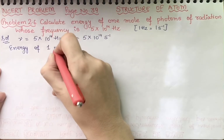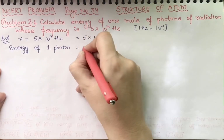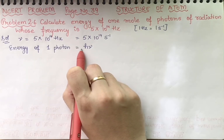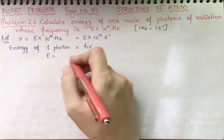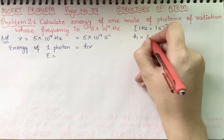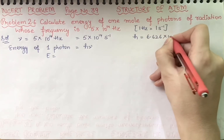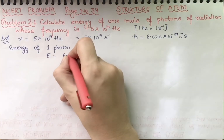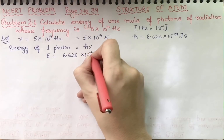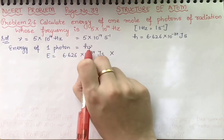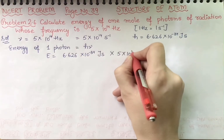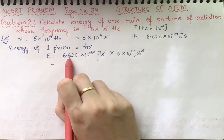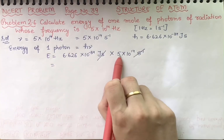The energy of one photon is given by E = hν, where n equals 1 for one photon. Here h is Planck's constant, h = 6.626×10⁻³⁴ J·s. Substituting the values: E = 6.626×10⁻³⁴ J·s × 5×10¹⁴ s⁻¹. The seconds cancel with the second inverse.